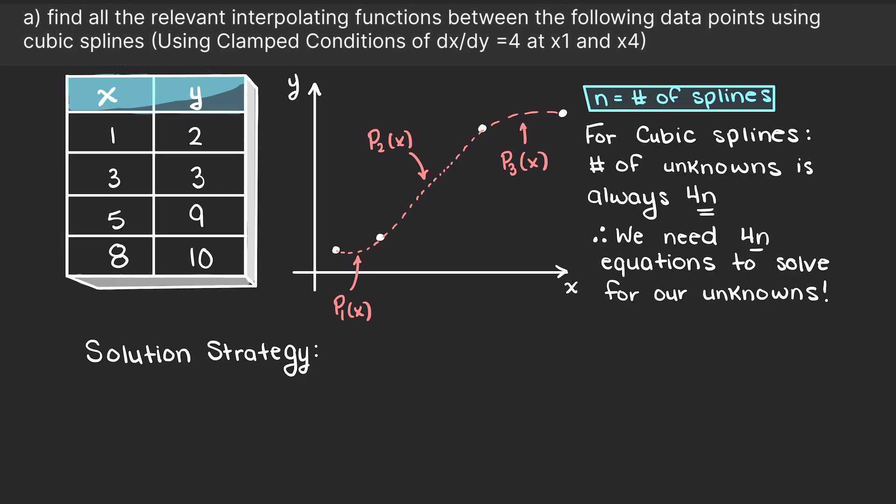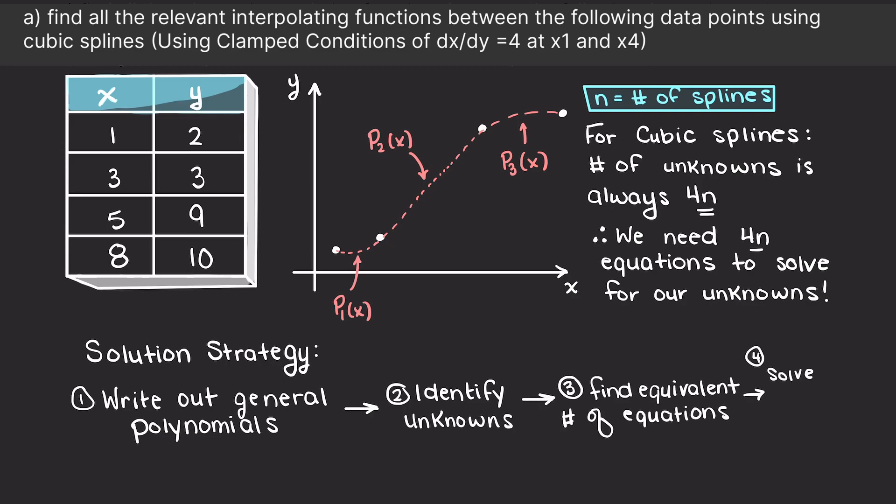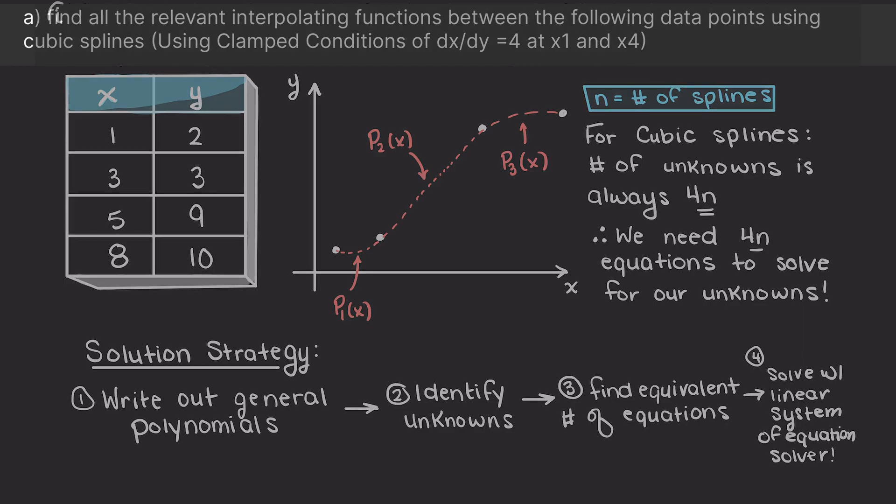First, we are going to find 12 equations such that we can find our 12 missing coefficients. And to find them, we will plug our 12 equations into a linear system of equation solver and then complete the problem. Stay with me and we'll walk through this problem fully together. So, let's begin by trying to find our 12 equations.